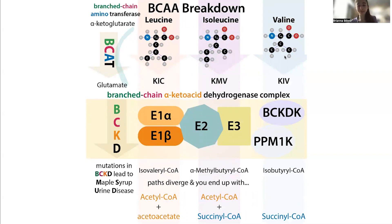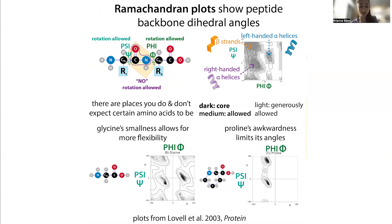With valine, it's the smallest of these branched ones, but because the branch is close to the backbone, it's actually going to be less flexible than something like leucine, where that V is pushed out further. So valine is going to have a hard time forming tight secondary structures — it's going to restrict the movement of the protein backbone when you have a valine.